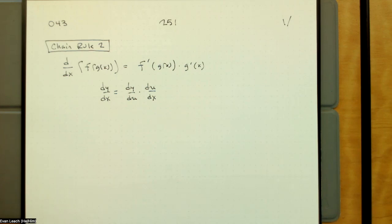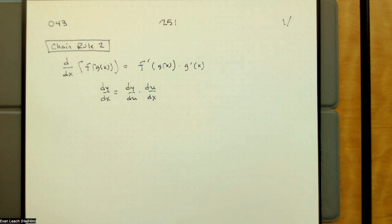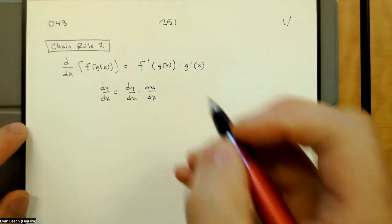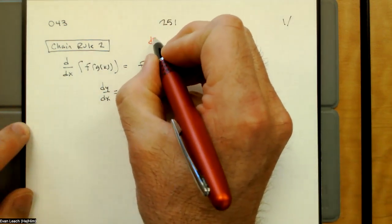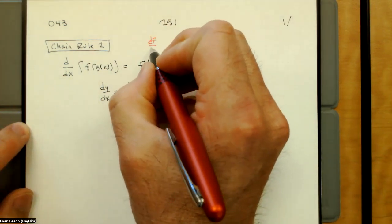In Leibniz notation, we say dy/dx is dy/du — the rate of change of y with respect to u — times du/dx, the derivative of u with respect to x. Using the names f and g, we might also read this as df/dg times dg/dx, which gives us df/dx.